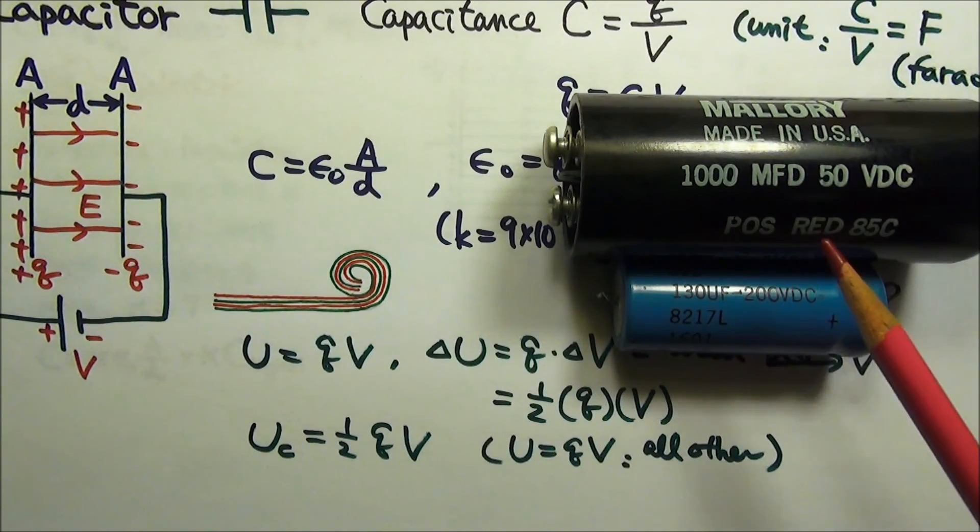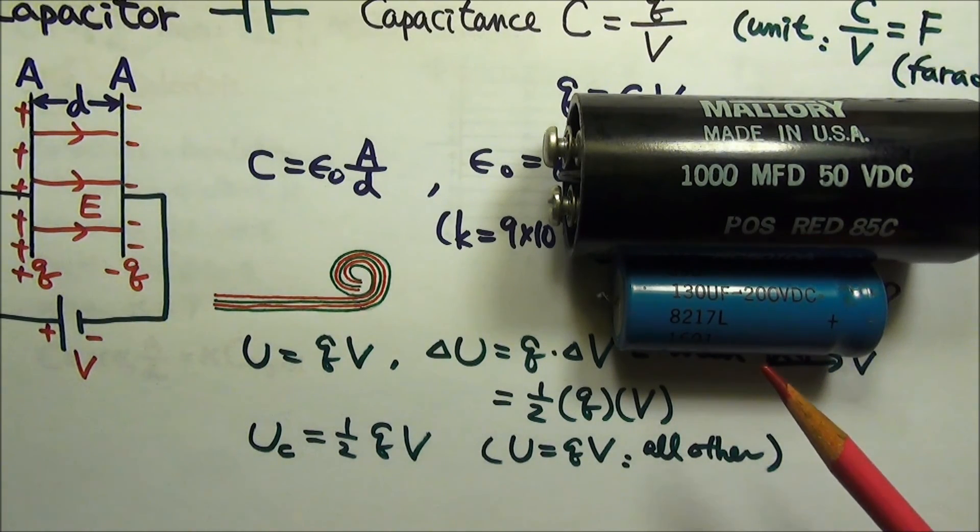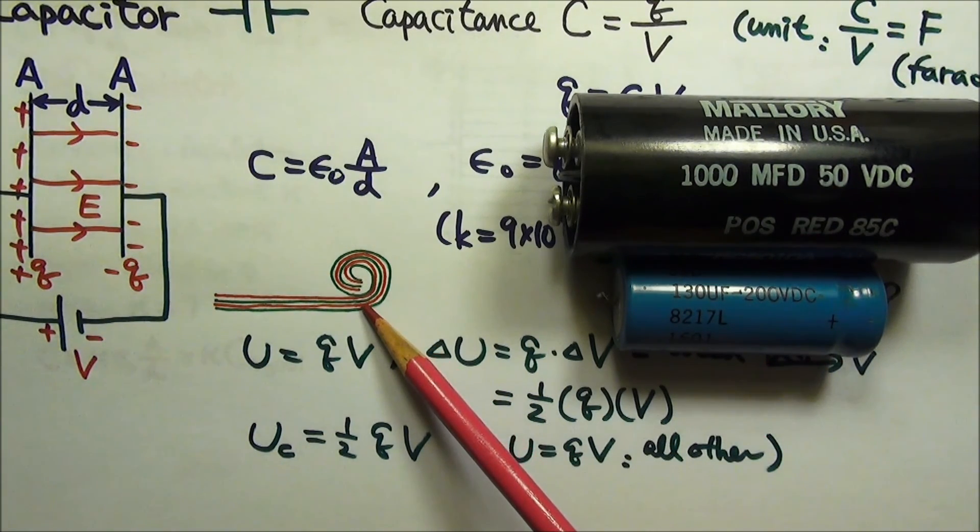And remember these rolled-up cylindrical capacitors? The insulating sheets between conducting sheets not only function as insulators to keep conducting sheets from touching, but also serve as dielectric to increase the capacitance by a factor of kappa.